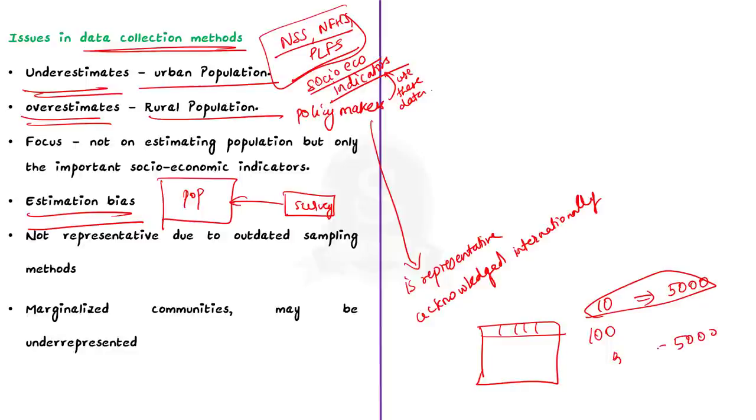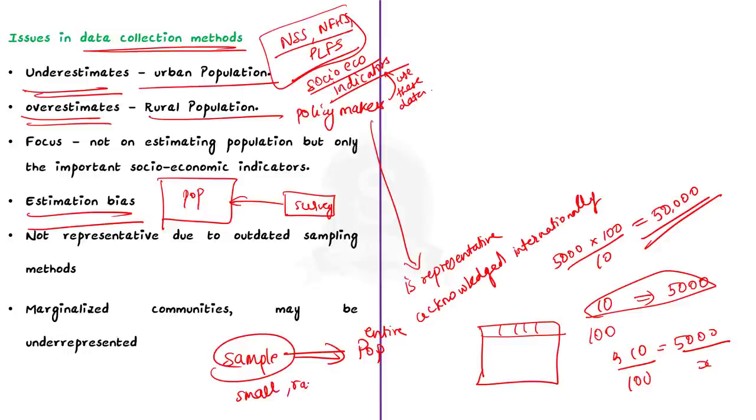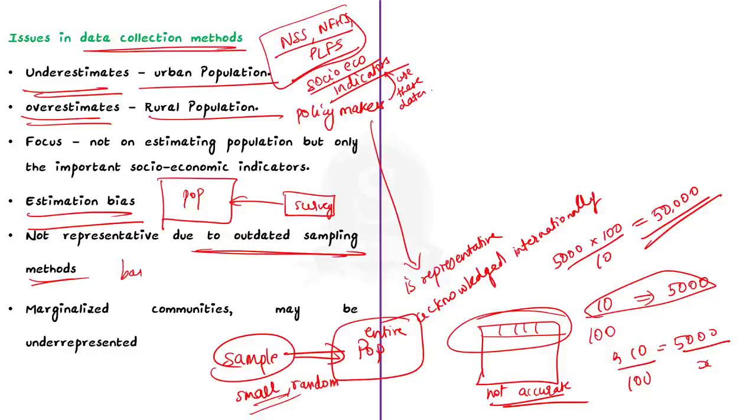The census data reveals that there are 100 households in this town. So, to estimate the average income for the entire town, we use the data we have obtained from the survey. For 10 households, the average income is Rs. 5000. So, for 100 households, it will be 5,000 into 100 divided by 10. So, the average income would be Rs. 50,000. So, this way, the survey-based estimate is adjusted to represent the entire town's population using projected population figures. The bias in this scenario is due to the small sample size of the survey. When the survey randomly selected only 10 households out of the total 100 households, it used a sample size that is relatively very small compared to the total population. Because of the small sample size, the survey may not accurately capture the true variability of household incomes in the entire town. Another concern raised is the underestimation of the urban population and the use of outdated sampling frames.